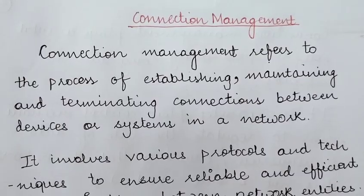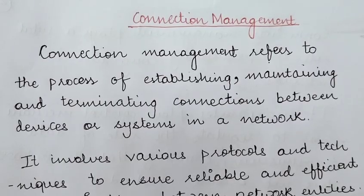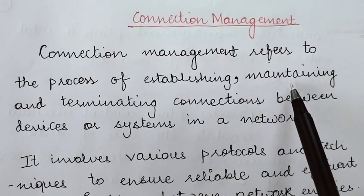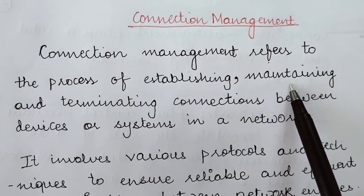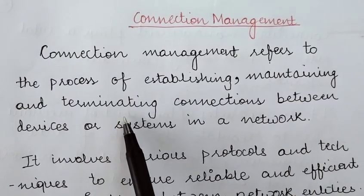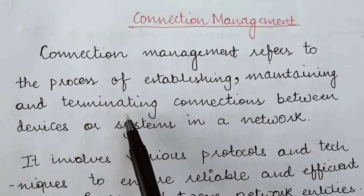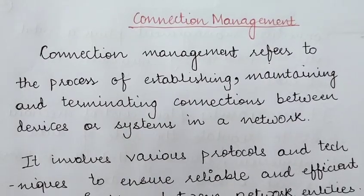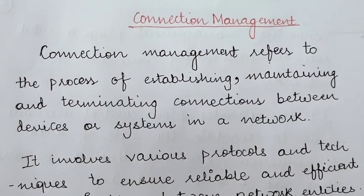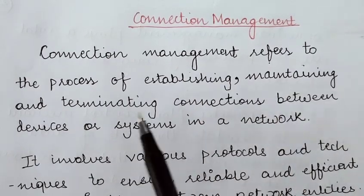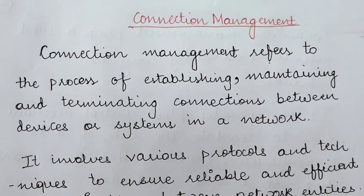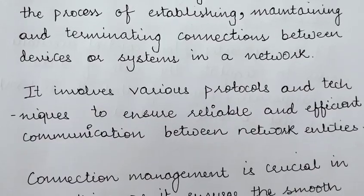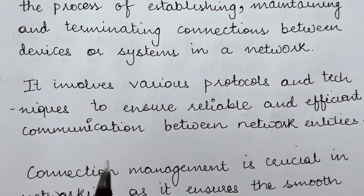Connection management refers to the process of first establishing a connection, because if you want to have a dedicated connection between two devices before transmitting data then you need to establish a connection. Once you have established a connection you need to maintain it throughout data transmission, and once you are done and that connection is no longer required, you terminate it. These are the three major things in connection management: establishing, maintaining and terminating connections between devices or systems in a network.